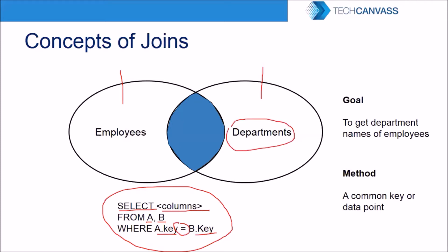If we are looking at a departments table instead, the relationship changes. For employees and departments — where we want to know which department an employee is posted in — the join condition will be on the department ID. So the department ID from the departments table will be equal to the department ID in the employees table.